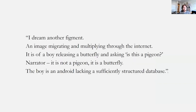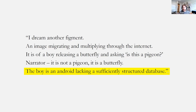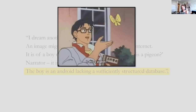From the poem: 'I dream another figment, an image migrating and multiplying through the internet. It is of a boy releasing a butterfly and asking, is this a pigeon? Narrator: it is not a pigeon. It is a butterfly. The boy is an Android lacking a sufficiently structured database.' For anyone who has developed AI tools for classification, this is often the main problem — getting that sufficiently structured database of labelled images to train your AI. The Android doesn't have enough data to differentiate a pigeon from a butterfly. That's the next step with our moth system: we've collected images and now need to develop an AI tool to classify them.